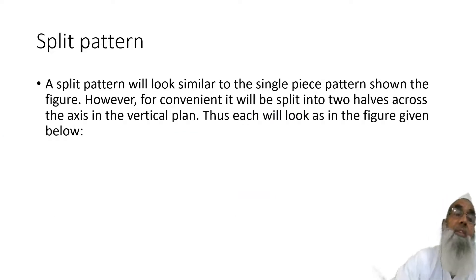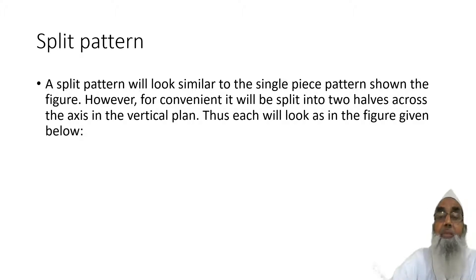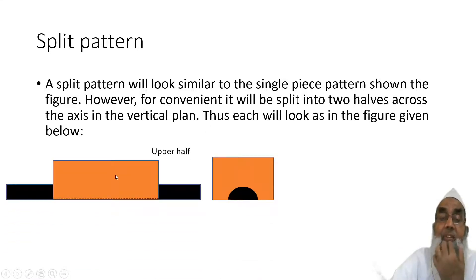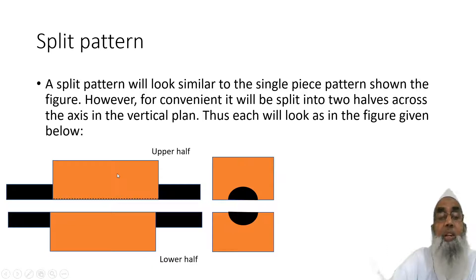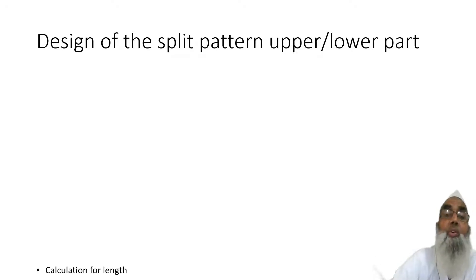Then comes the split pattern. The split pattern looks similar to the solid pattern, but it is divided into two parts. Generally, we choose the section that makes it easy to draw out. It is split across the vertical plane. Therefore, the upper half will look like this and the lower half will look like this. Now we need to design the dimensions of the upper and lower half.